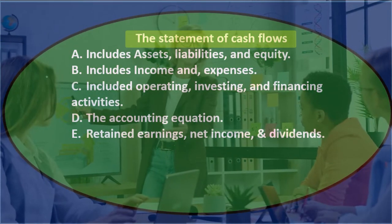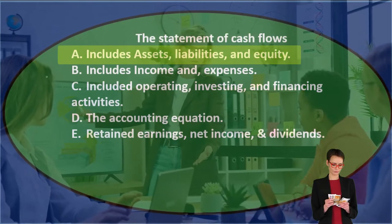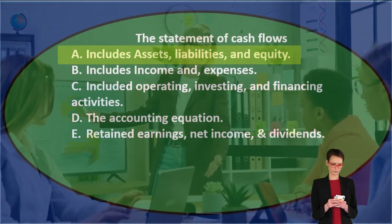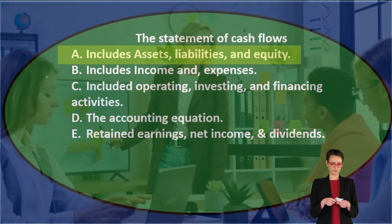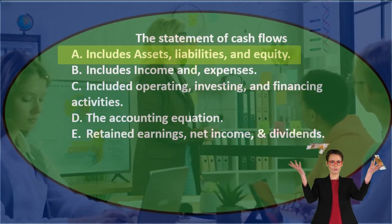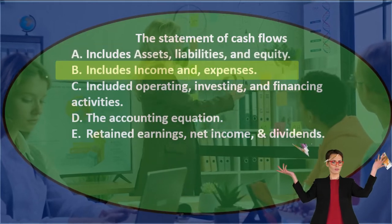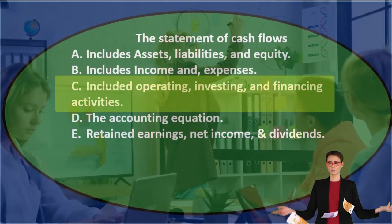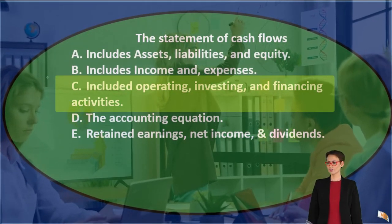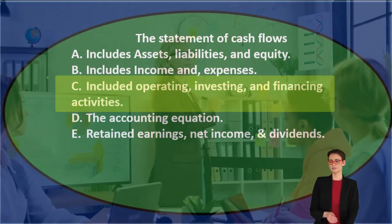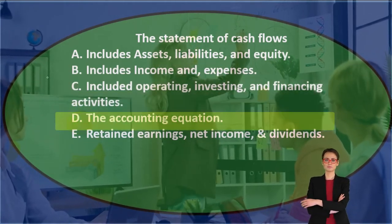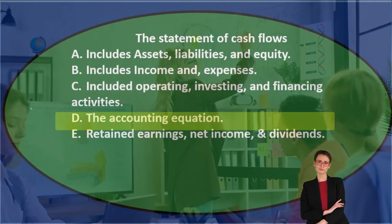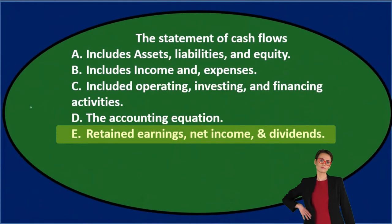Next question: the statement of cash flows A. Includes assets, liabilities, and equity. B. Includes income and expenses. C. Includes operating, investing, and financing activities. D. The accounting equation. E. Retained earnings, net income, and dividends.